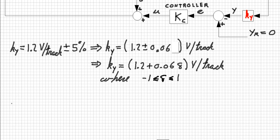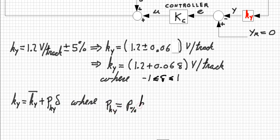In general, a constant with a tolerance in percentage of its nominal value can be written as the nominal K plus a constant PK times delta, where PK is the percentage times the nominal value, and delta is any value between minus 1 and 1.